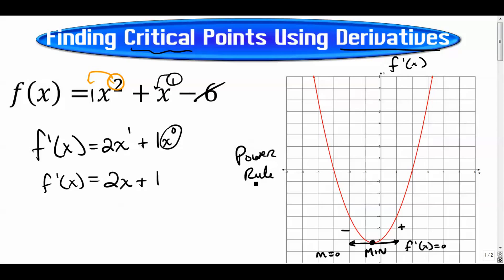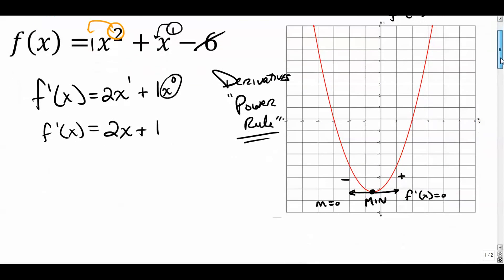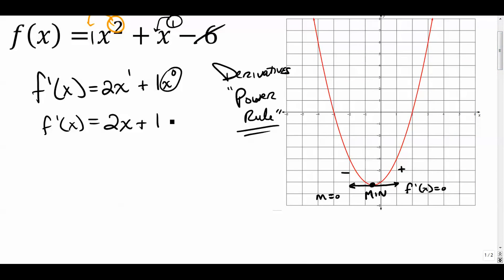If you're fuzzy on that process, look for my video on the power rule for finding derivatives. Once we have our derivative, this is the general formula that gives us the slope of our line at any given x value. We set that equal to zero to find where the graph flattens out, so two x equals negative one, giving x equals negative one-half.